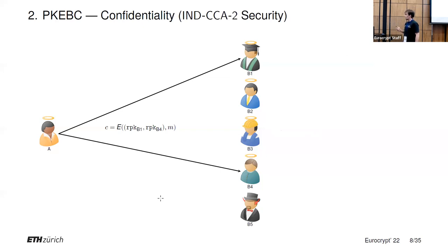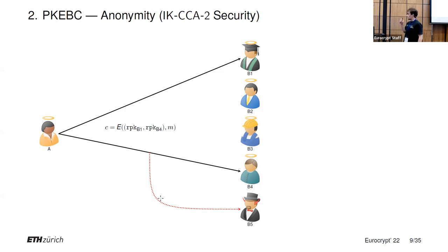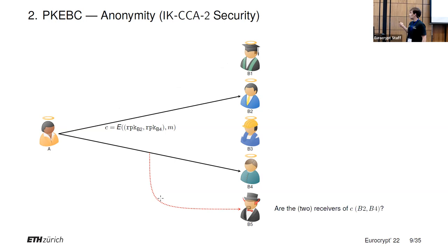We also have confidentiality: if Alice sends a message to two honest receivers, a party who is not one of these receivers and who is dishonest will not learn anything about the underlying message other than the size of the message — so B5 would not learn anything other than the length. Similarly, for anonymity, B5 will not learn who the receivers of the message are, although it will still learn that the ciphertext is intended for two receivers. So it would not be able to tell if the receivers were B1 and B4, or B2 and B4, or any other possible combination of honest receivers.